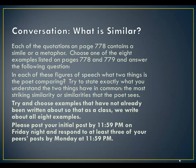When you're doing your reflection journal this week, use this checklist: underline a poem's key comparison, look for both similes and metaphors, consider how the two things being compared are alike, examine in what ways the two things being compared are alike, and ask whether the metaphors or similes in the poem have anything in common — and if so, what does that commonality suggest? In your conversation this week you're going to be talking about what is similar in each of the quotations on page 778, which contains a simile or a metaphor. Choose one of the eight examples posted on the page and answer: in each of these figures of speech, what two things is a poet comparing? Try to state exactly what you understand the two things have in common — the most striking similarity or similarities that the poet sees. Try to choose examples that have not already been written about so that as a class we cover all eight examples.